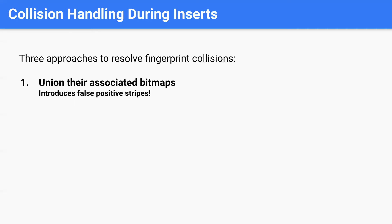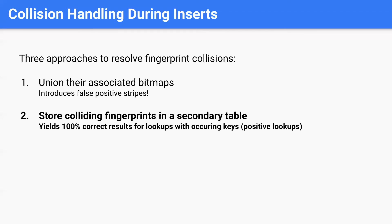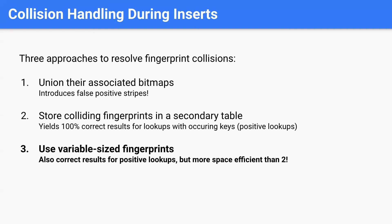To ensure 100% correct lookups, we need to resolve fingerprint collisions during inserts. We considered three different options. First, one could union the associated bitmaps, which won't consume any extra space but will introduce false positives. Second, one could store colliding entries in an additional full-fledged hash table, which ensures correct lookups. Or third, we could use variable sized fingerprints — using as many bits as needed to break the tie between colliding entries. We opted for this design as it is both space efficient and ensures correct lookups.